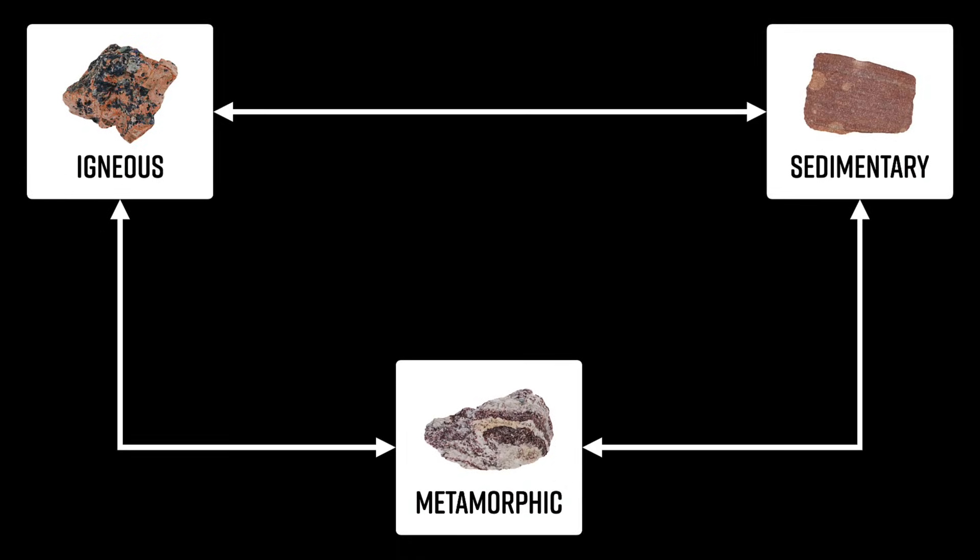Here we have our three categories of rocks: igneous, sedimentary, and metamorphic. You'll notice there are arrows going in all directions, signifying that any type of rock could and often does become a different type of rock. But we need to take a look at the circumstances that could make that happen.